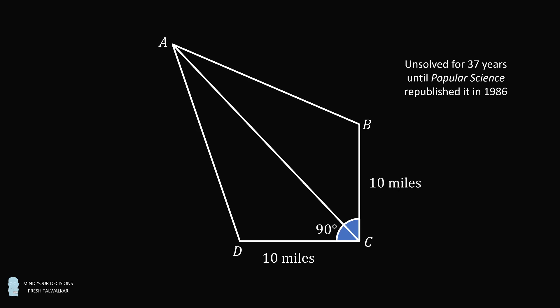The puzzle was published in the magazine Popular Science, and it went unsolved for 37 years until the magazine republished the problem in 1986 and asked readers to submit answers. They received over 2,000 correct replies. So while this problem isn't in the category of unsolved or extremely difficult math problems, it is just an interesting problem that was shared in the common media.